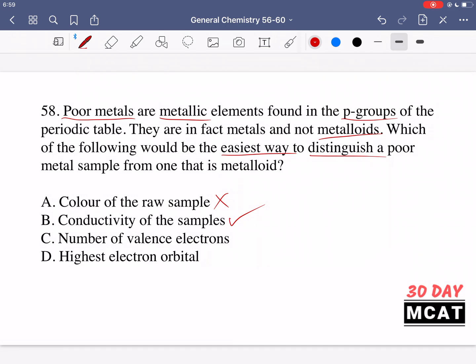Option C says number of valence electrons. No, because these are in the same group. In the periodic table we group things based on valence electrons, so if things are in the same group they have the same number of valence electrons. Option D says highest electron orbital. We can't use that either because these are in the p groups, so the highest electron orbital is p for both. The best way to distinguish is option B.